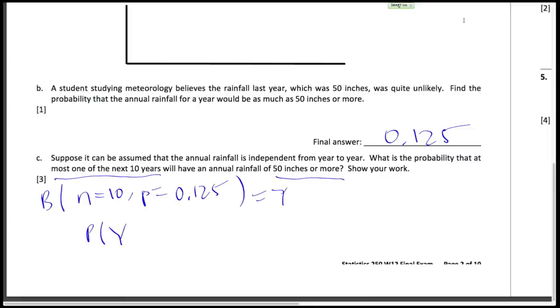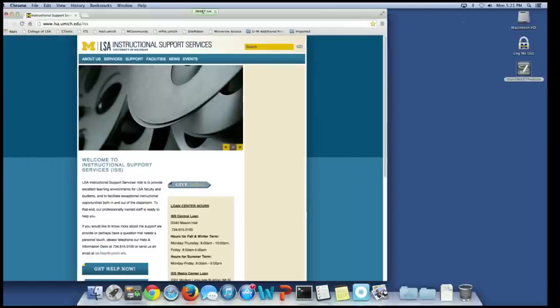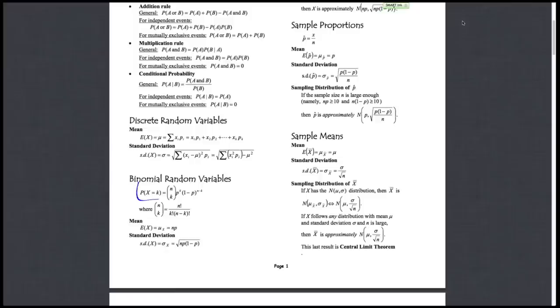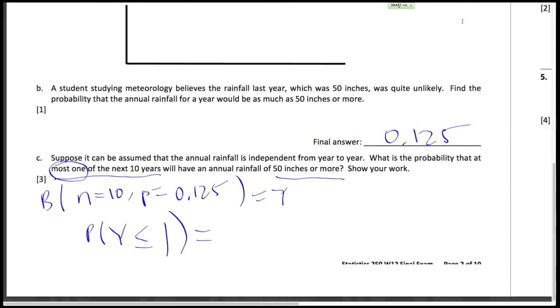And we want to know probability that y is less than or equal to 1, because it's at most 1. So we can have zero or one years with 50 inches of rainfall. If you want to look on the formula card, that's just the binomial random variable down here. So we want the probability where k equals zero or k equals one. n equals again 10 because there's 10 chances.